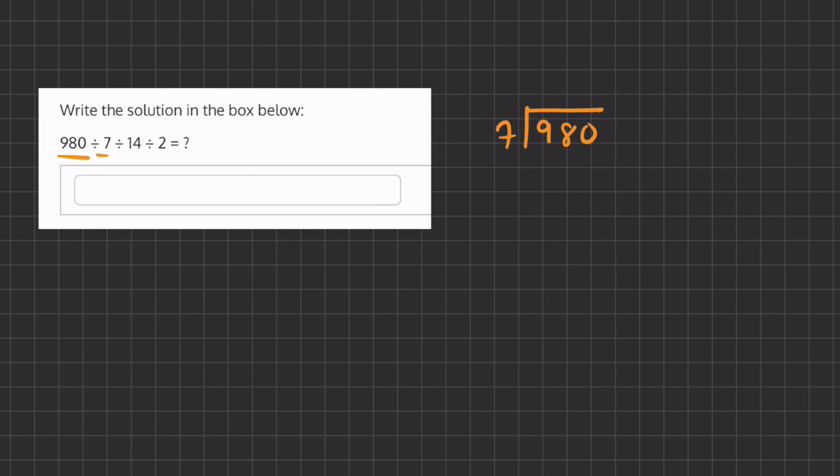So let's begin. We're going to ask ourselves how many times does 7 go into 9, and that is once. 7 times 1 is 7, and we'll have a remainder of 2.